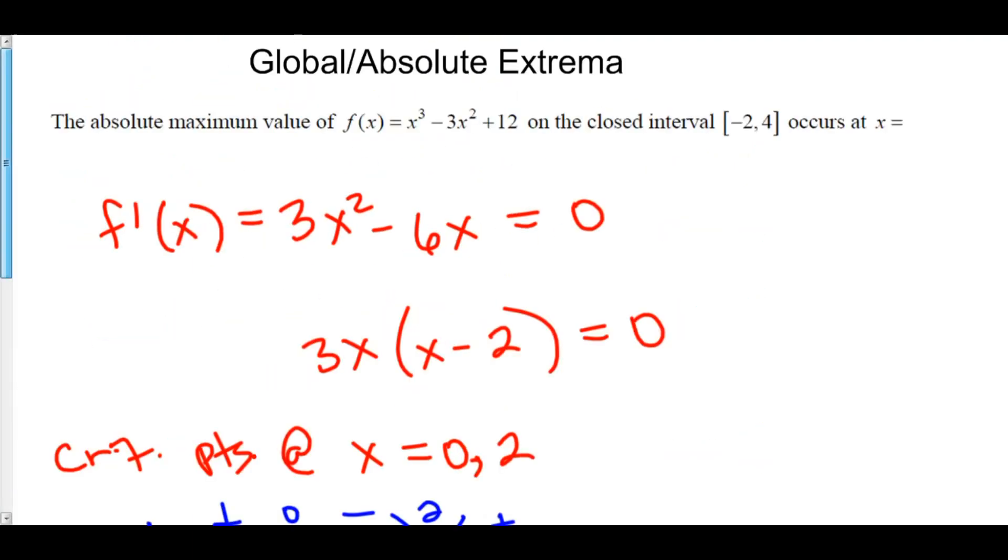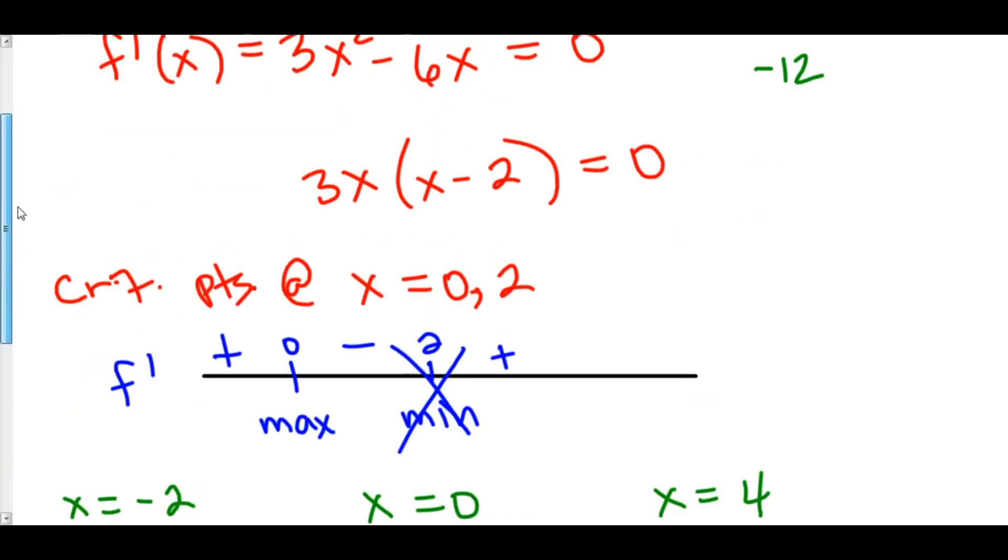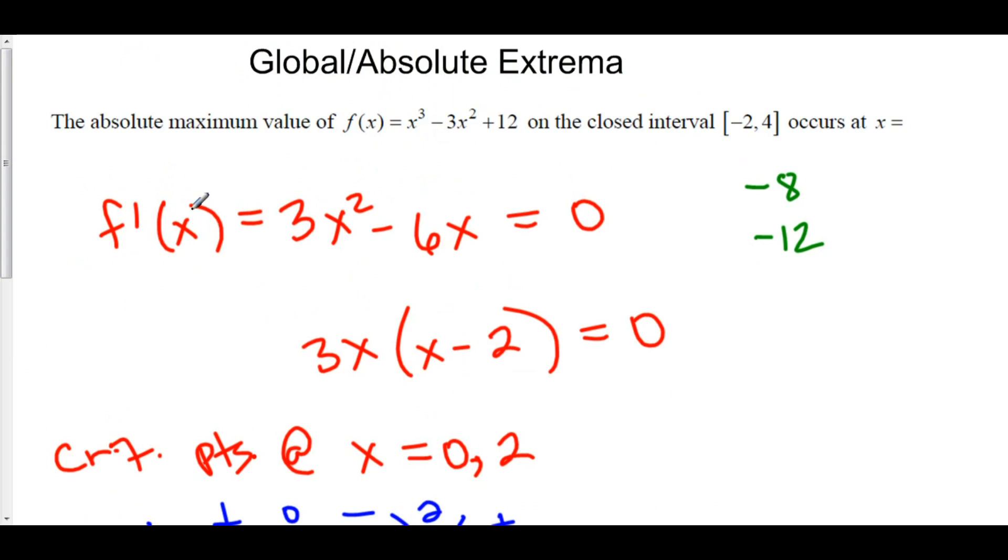Now, if you plug negative 2 into your function, you have (-2)³ = -8, (-2)² = 4 times -3 = -12, and then plus 12. So that is -8. Let's check 0. When you plug in 0, you get 12.